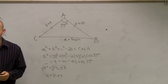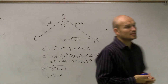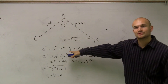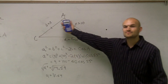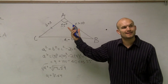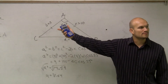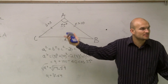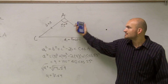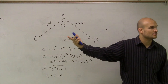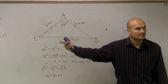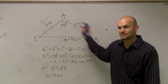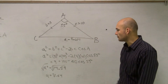Does everybody follow what I did there? All I did was take the law of cosines — make sure it's minus two BC — and just plugged in what I had. So to do this, you want to make sure you have your three formulas, see which one has all the elements you have, then identify what you're missing, and that's the one you're going to plug in for.